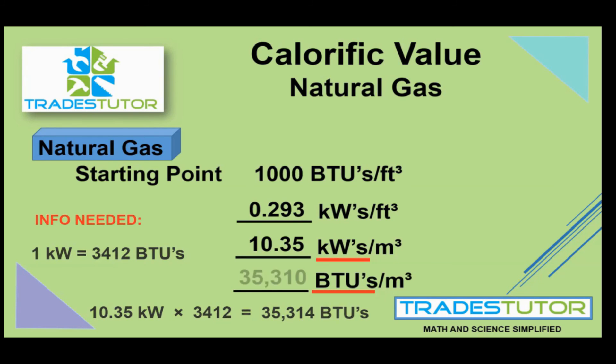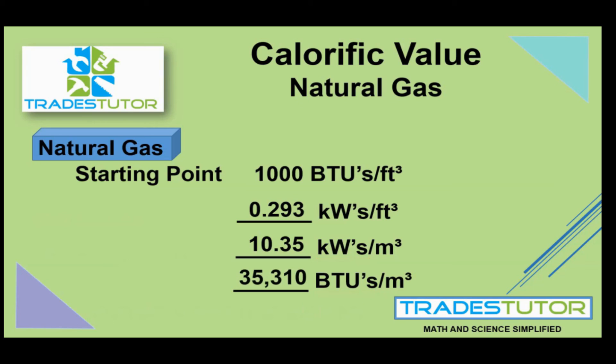Through rounding, what we end up with is 35,310. The idea here is that you have to visualize what you're doing — where you're starting from, where you're going to, and the variables you need. Cubic foot to a cubic meter, we're going bigger. Kilowatts to BTUs, we're going to generate a bigger number. And that's the trick to the whole thing.